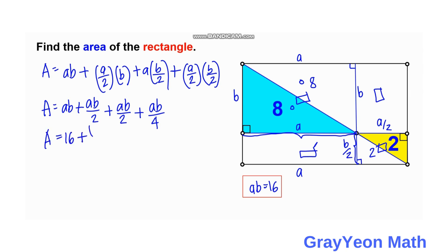So 16 plus 16 over 2 plus 16 over 4. So we have area is equal to 16 plus 8 plus 4. So we have area is equal to 36 square units.